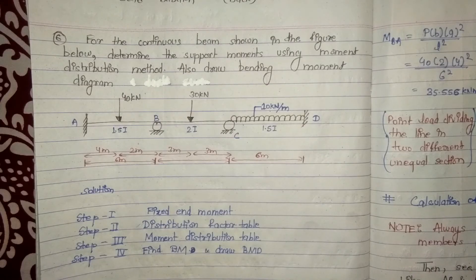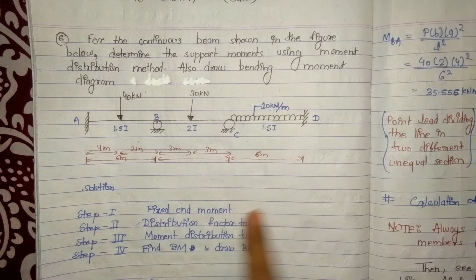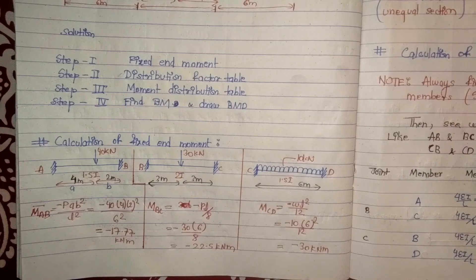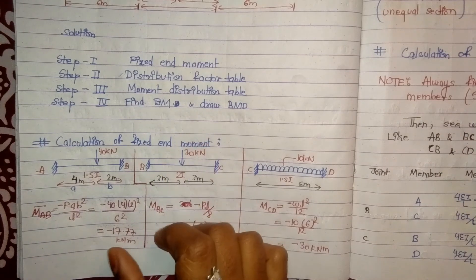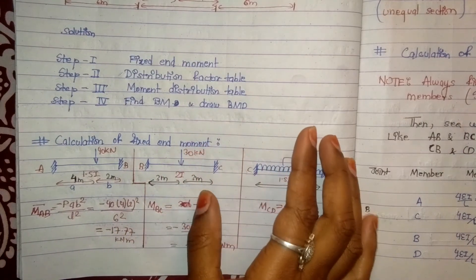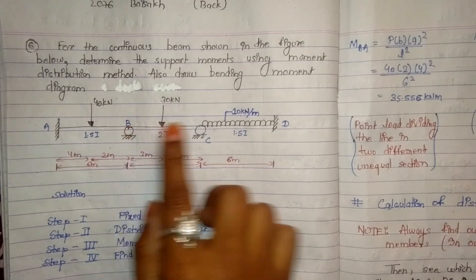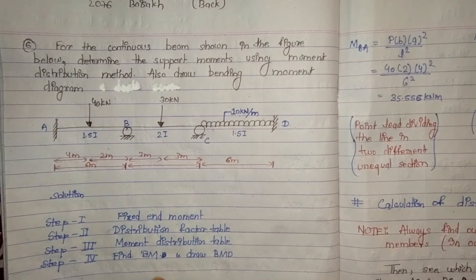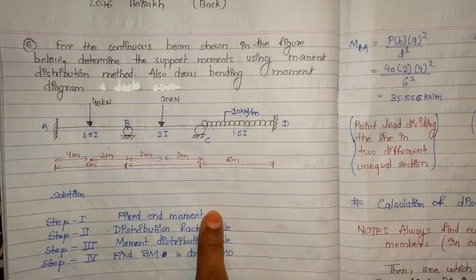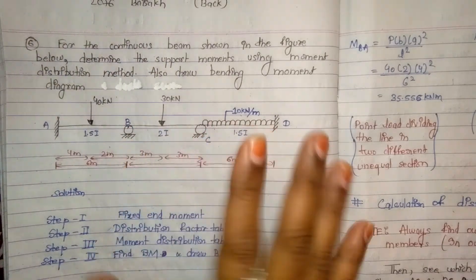In the first step we need to find the fixed end moment. For the calculation of fixed end moment, let us suppose that all member ends are fixed. Like here B and C, both are hinged. But for the calculation of fixed end moment we will suppose that point B and point C, both are fixed.